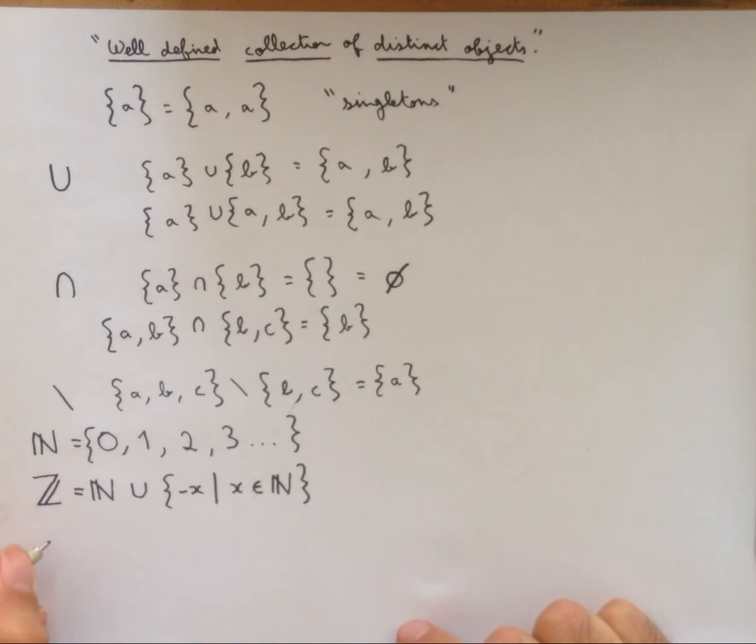Another thing we can build with this set builder notation is the set of rationals, q. This is the set of all such that a and b and b are integers.